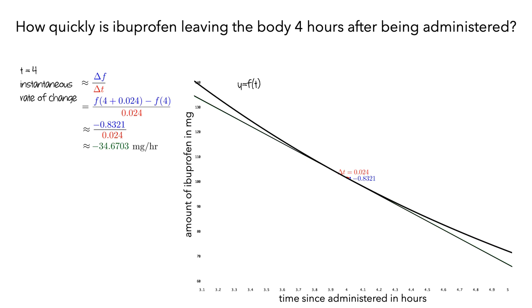The slopes of the secant lines were approaching the value negative 34.7. This is a good approximation for the slope of the tangent line, but how good is it?